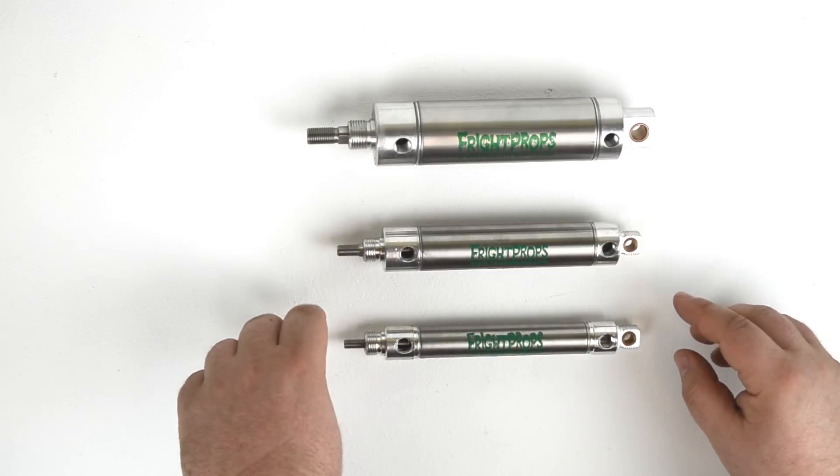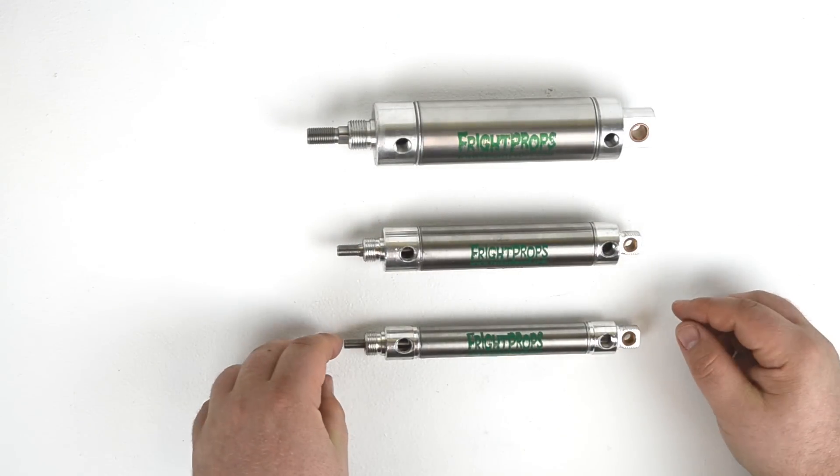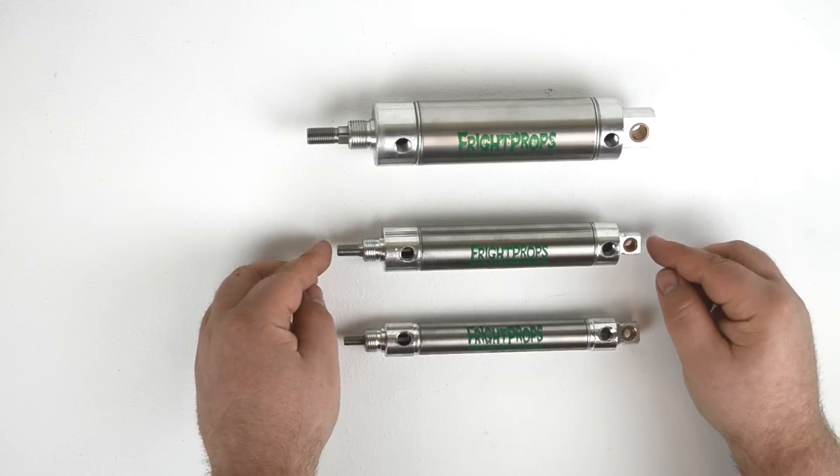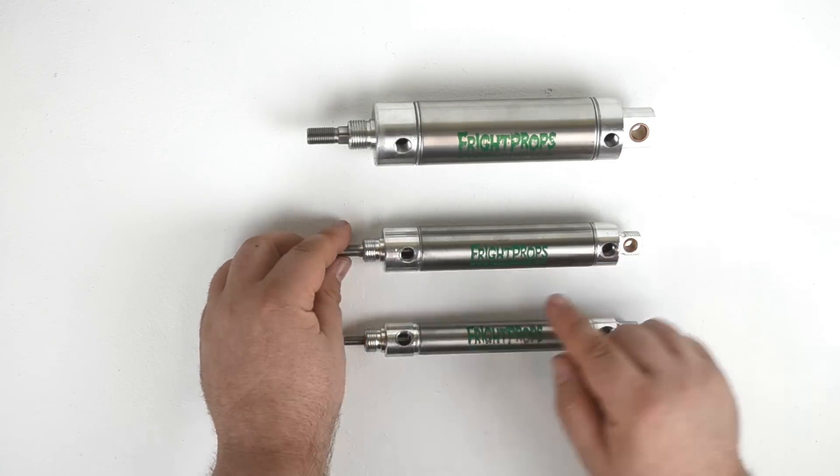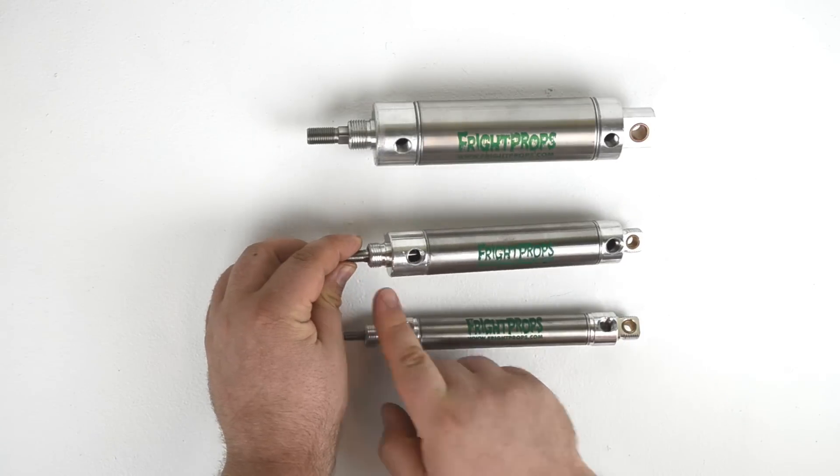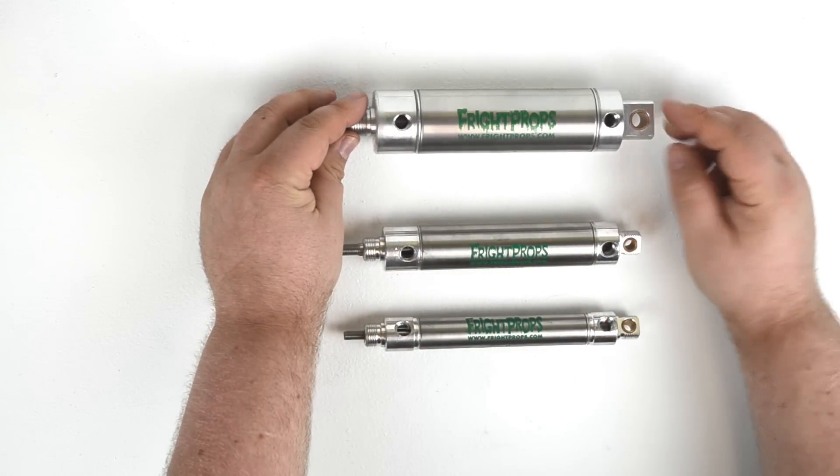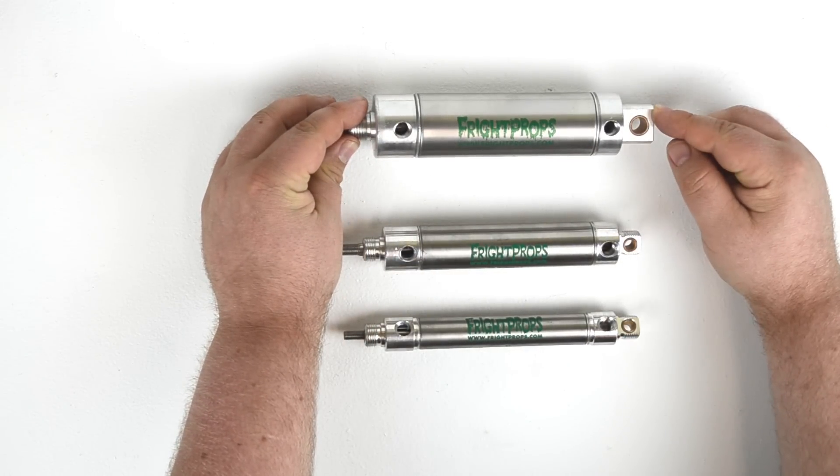These cylinders are also all universal mount cylinders. That means that they can be mounted at the nose and the tail. You'll notice that the three quarter inch bore and the one and one sixteenth inch bore have threads both at the nose and at the tail. The one and one half inch bore cylinder has threads only at the nose and is not threaded at the rear of the cylinder.